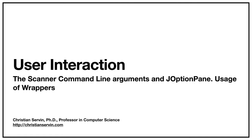Hi everyone. Welcome to the session on User Interaction. Today we're going to talk about Scanner, command line arguments, and J Option Pane. The whole idea of using these three different items is to give you a sense of user interaction. I'm also going to talk about the usage of wrappers — objects that help you transform strings into a data type.